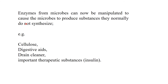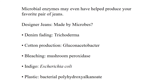Enzymes from microbes can be manipulated to cause microbes to produce substances they do not normally synthesize. Digestive aids, drain cleaner enzymes, and important therapeutic substances like insulin are produced using microorganisms. Industrial products made by microbes include: stonewashing of denim by Trichoderma, cotton processing by Gluconacetobacter, bleaching by mushroom peroxidase, indigo production by E. coli, and plastic by bacterial polyhydroxyalkanoates.